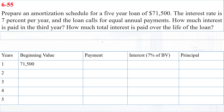We have borrowed $71,500 for five years at an interest rate of seven percent. First, we have to calculate the cash flows or coupon payments that we will make to repay this loan. We can calculate the cash flows using the formula for the present value of an annuity, where the present value is $71,500, the term is five years, and the interest rate is seven percent.